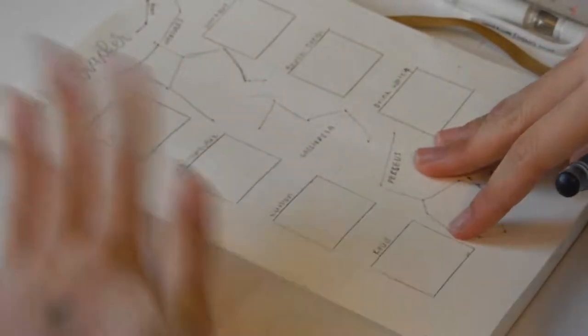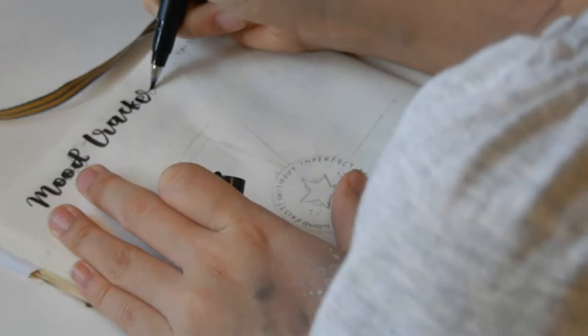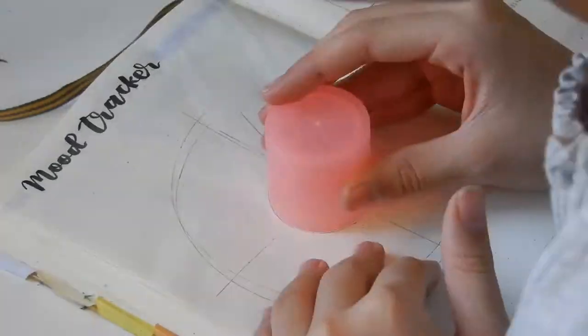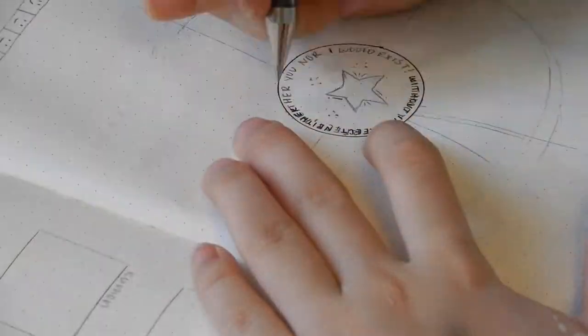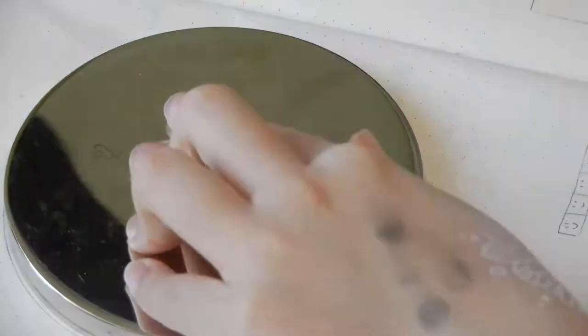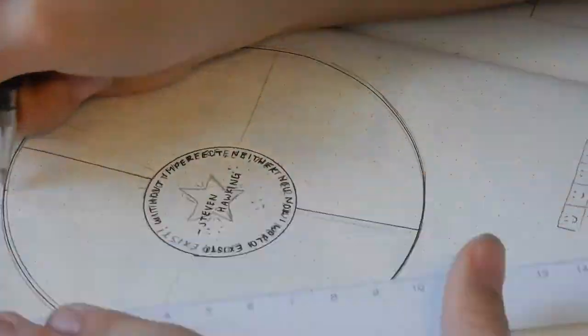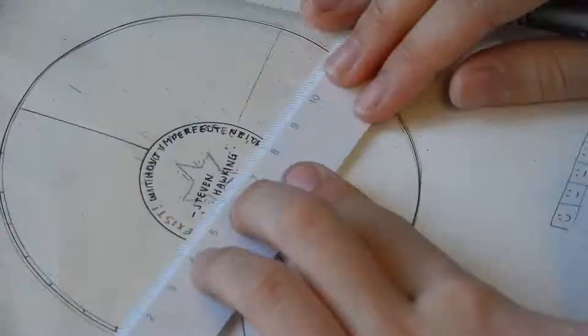This next page is my moon tracker. In the center, I have this quote by Stephen Hawking in honor of him. It says, without imperfection, neither me nor you would exist. I thought that was such a great quote, because we should always strive to do our best, but not strive to be perfect.